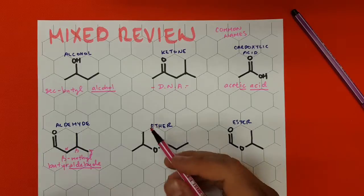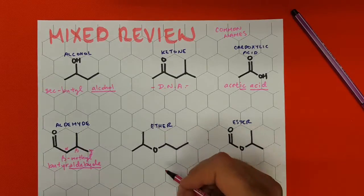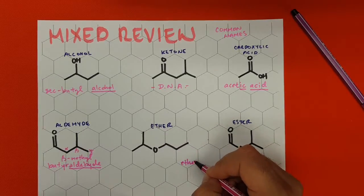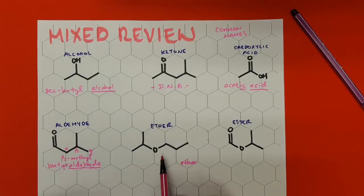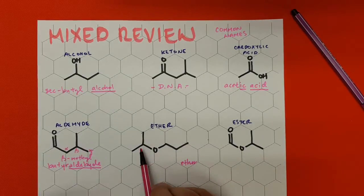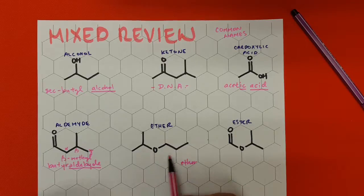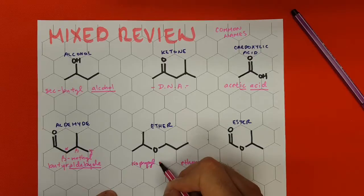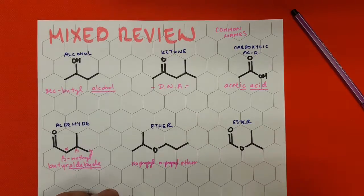Ethers are very simple. The oxygen atom is going to turn into the word 'ether.' Then we look at what's attached on both sides: one, two, three on each side — both of them are propyl. But here we have isopropyl, and this is n-propyl. So this would be isopropyl and propyl ether.